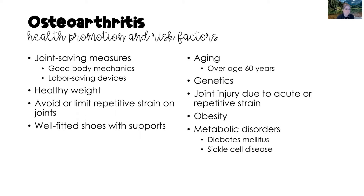How do we prevent osteoarthritis? Good joint-saving measures are a great place to start — good body mechanics, labor-saving devices, and ergonomic maneuvers. Maintaining a healthy weight will help to reduce the strain on the hips, knees, and ankle joints. Avoiding or limiting any activity that puts repetitive strain on the joints, and using well-fitted shoes with supports.